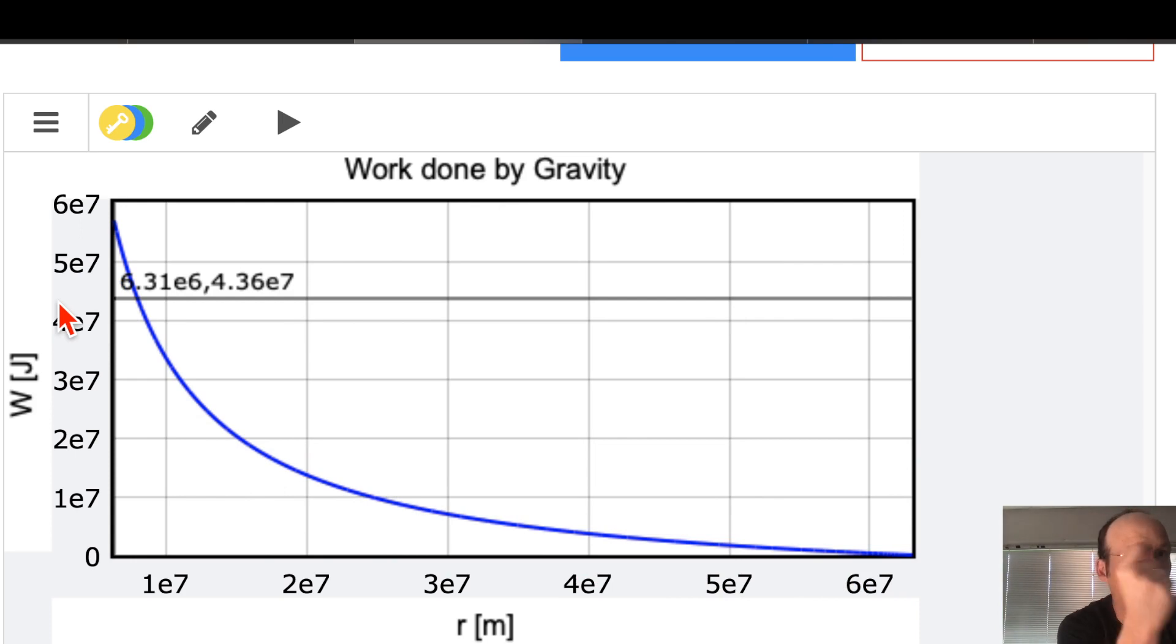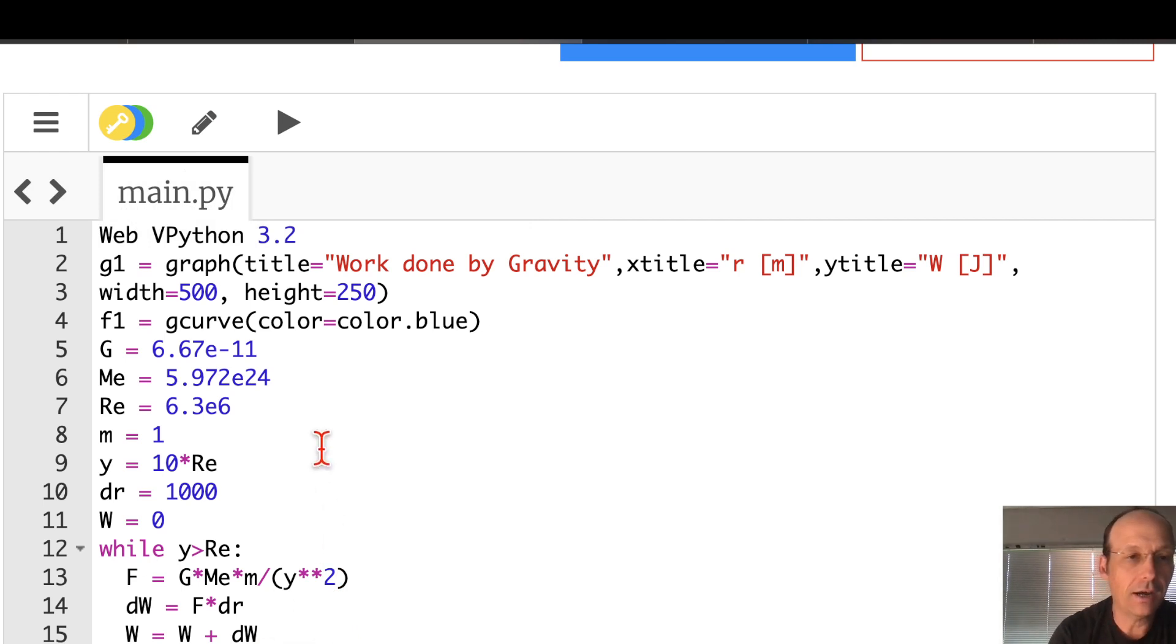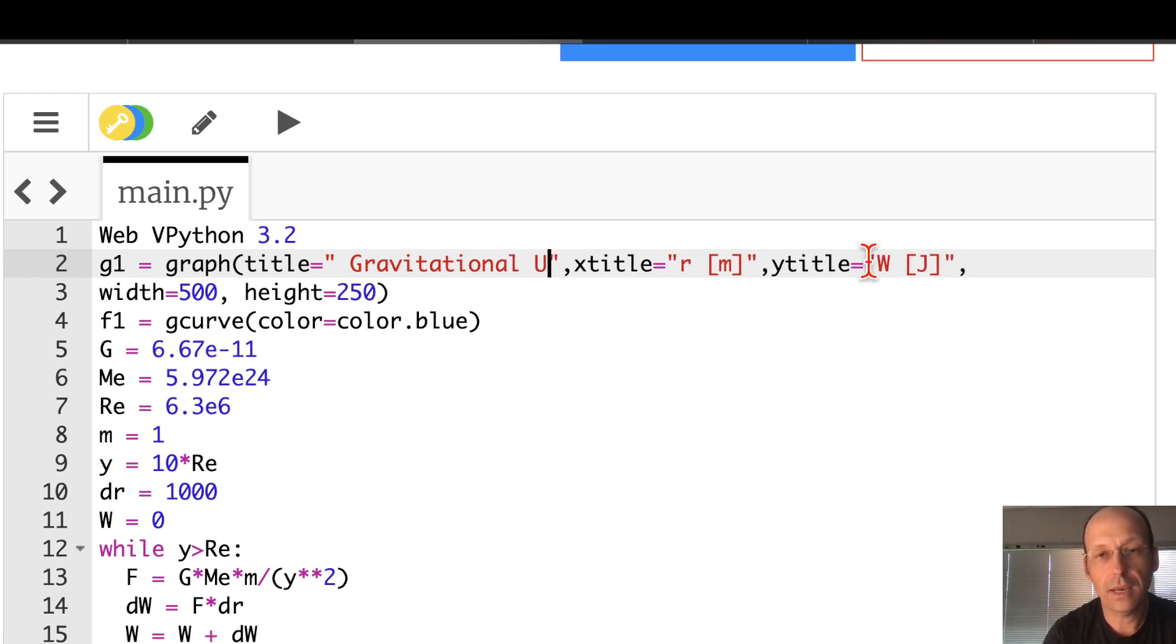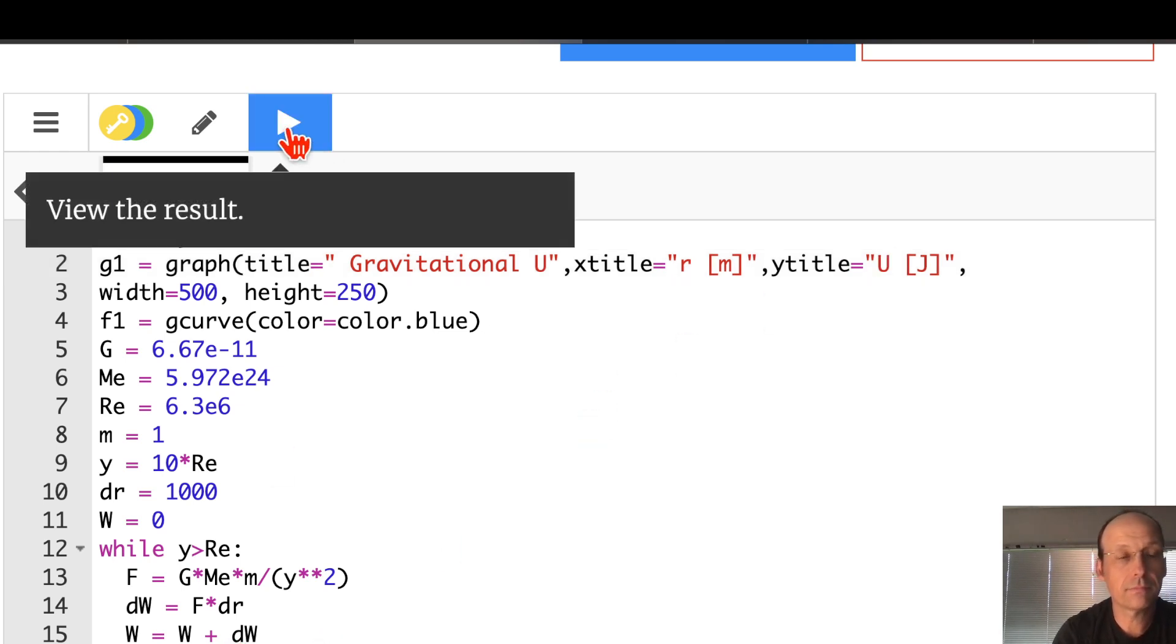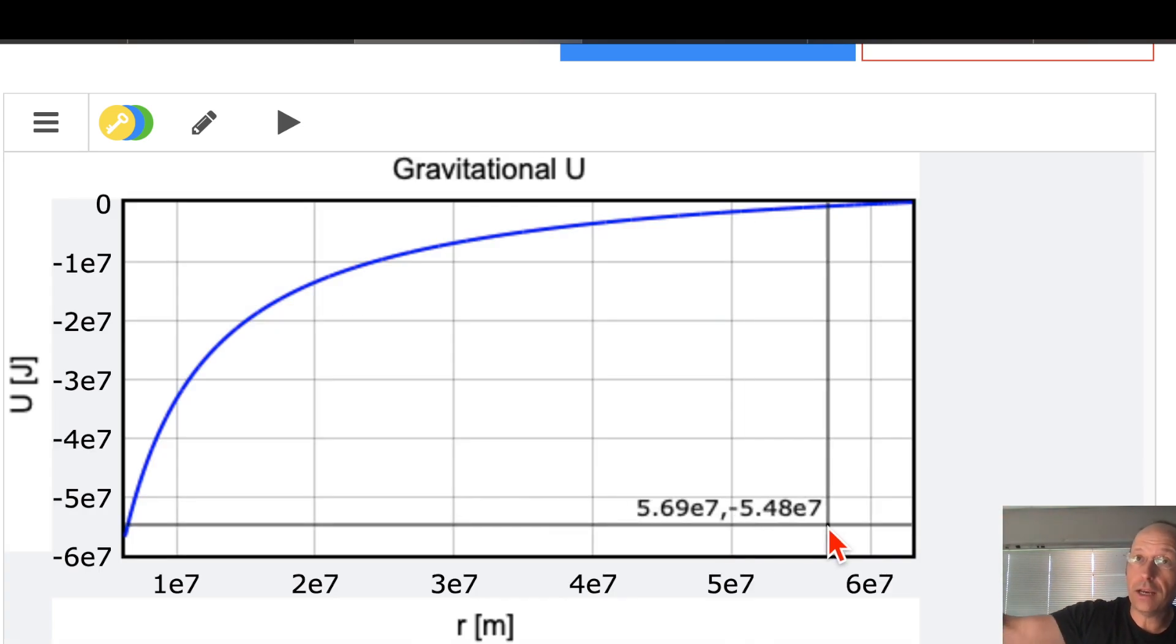Now, if I want to call that a potential energy, I can plot that as negative of the work. So let's do that. Let's call this gravitational potential energy, U. And then we'll call this U. And then all I need to do is put a negative sign there. And you'll notice that it looks like a hill. As the ball is moving down the hill, it's going to speed up. And that's exactly what we want.